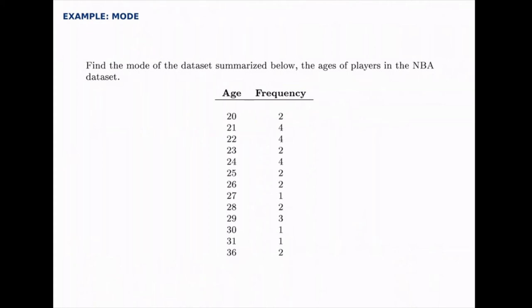Here we'll find the mode of a data set that's summarized for us. We're already given the frequency table rather than just the raw data, so most of the work is done for us.